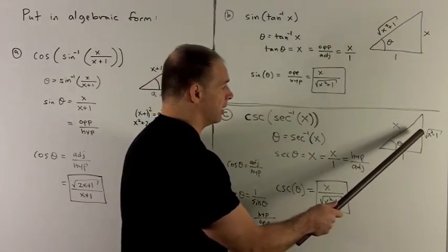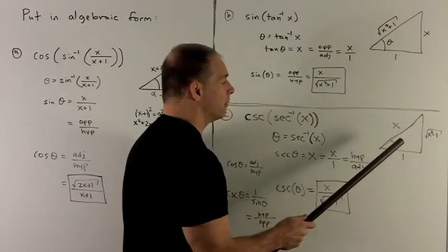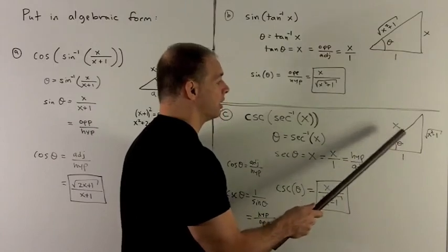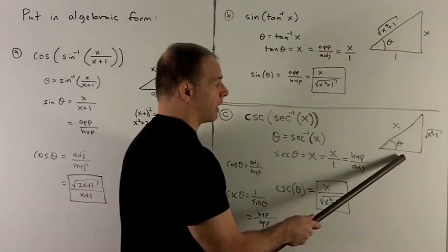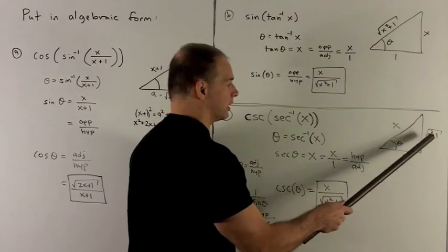My opposite side is going to be square root of x squared minus 1. I square this gives me an x squared. Subtract that gives me x squared minus 1. And then I square root to get the length of this side.